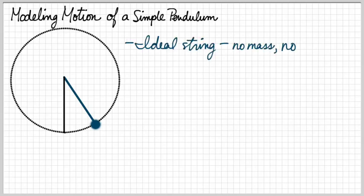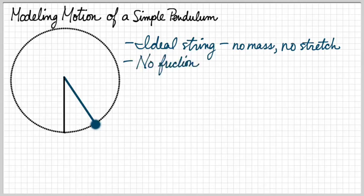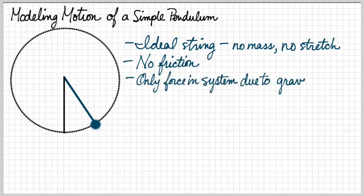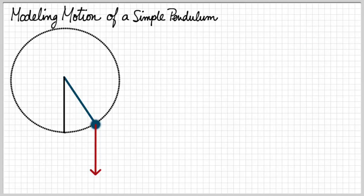In this basic system, I have a mass hanging from an ideal string. This means the string is massless and it doesn't stretch. No friction or air resistance in this system. In fact, the only force I'm considering here is gravity. The gravity vector will point straight down and it will have a magnitude of m times g where m is the mass of the ball.